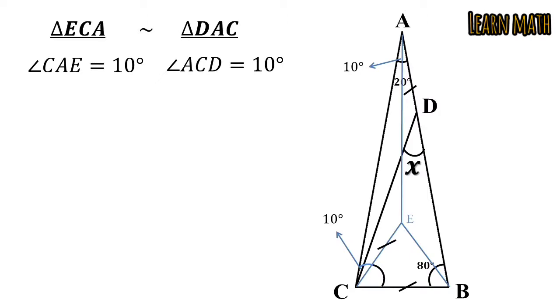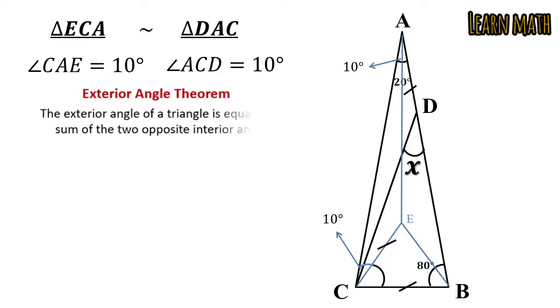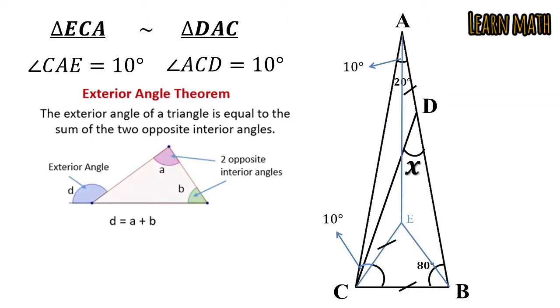Now we can easily find angle X by exterior angle theorem. What is exterior angle theorem? Exterior angle theorem is a theorem which states that the exterior angle of a triangle is equal to the sum of the two opposite interior angles. Look at the figure. In this figure, angle D is equal to sum of the opposite two interior angles. So angle X is the exterior angle of triangle ADC and we can write X is equal to 10 plus 20, and X is equal to 30. So the unknown angle is 30 degrees. This is the required answer.